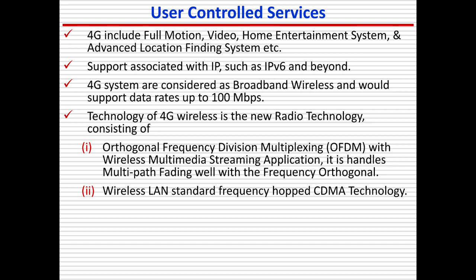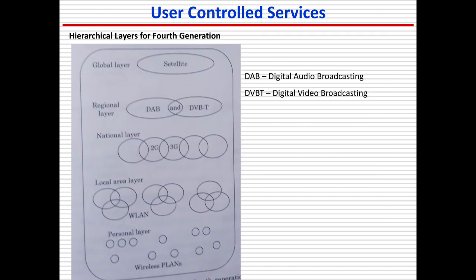The technology also includes CDMA — Code Division Multiple Access technology — and wireless LAN standard frequency. Looking at the layer structure: the regional layer includes DAB (Digital Audio Broadcasting) and DVB-T (Digital Video Broadcasting).